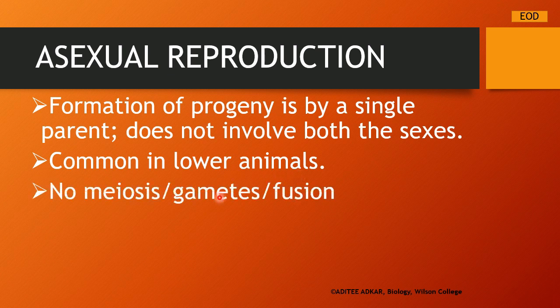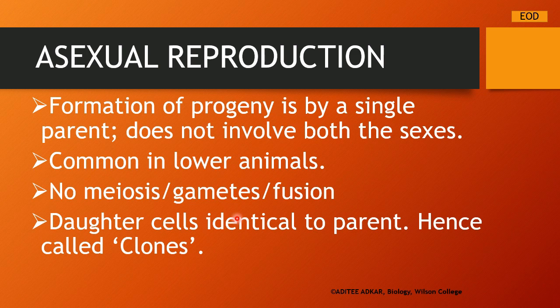As this is asexual reproduction, there is no gamete formation involved — no male and female gametes, no fusion of gametes. And as there is no gamete formation, the process of meiosis also does not take place here, since meiosis is basically required for gamete formation. The cells from the parent body simply divide by the process of mitosis and daughter cells are formed. Hence the daughter cells are identical to the parent cells, so we also call them clones.